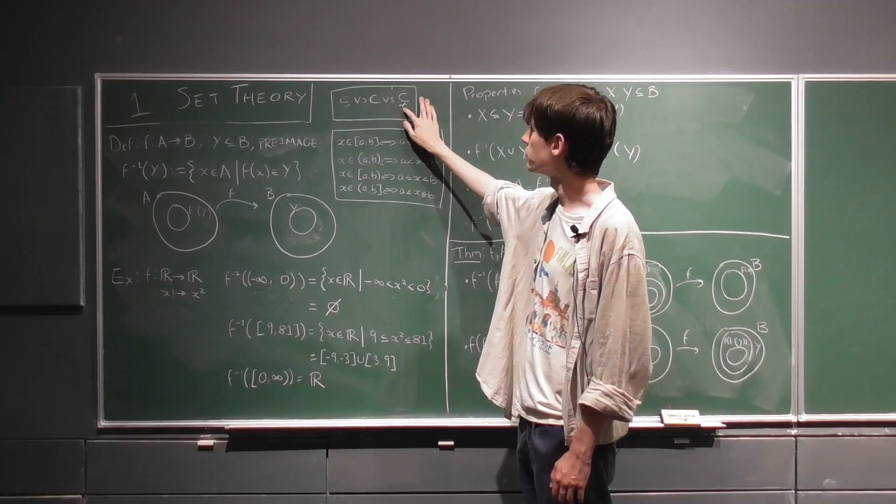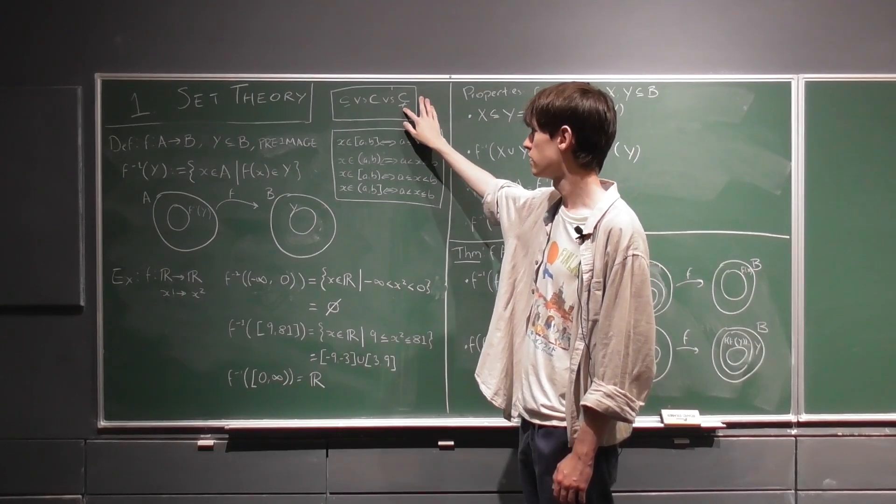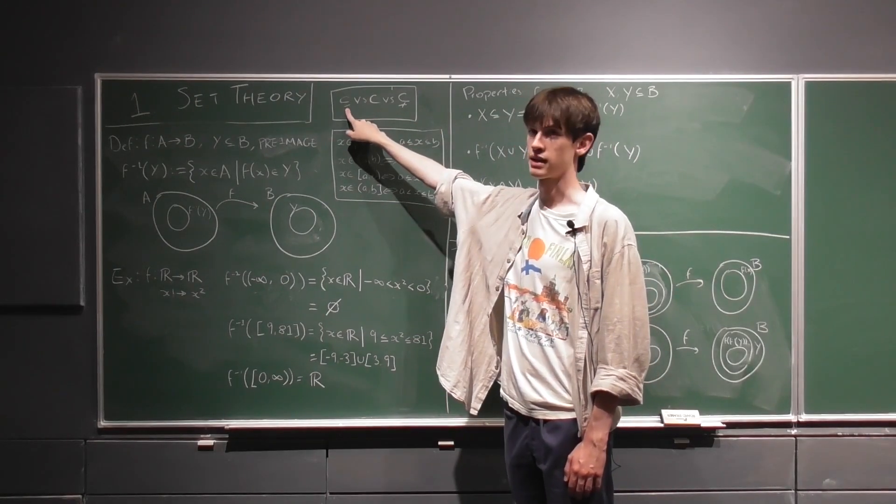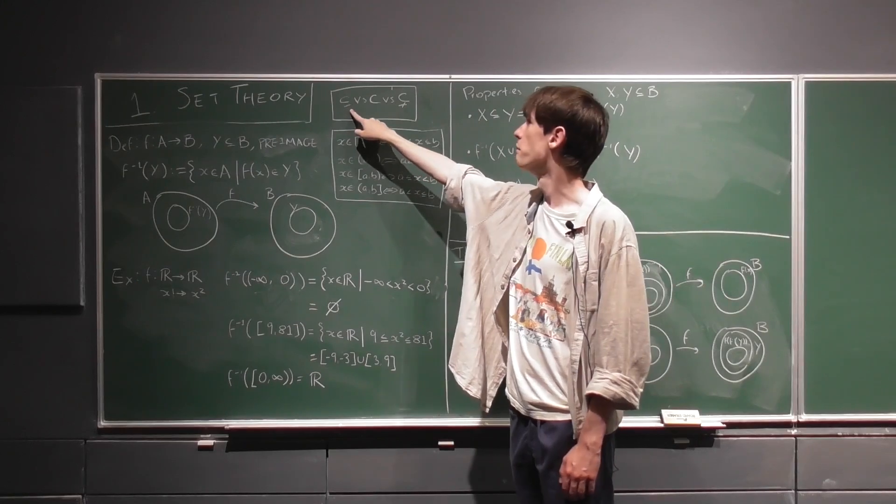If we ever want to be very clear that we mean a strict subset, so it's contained within but not equal to, we'll use this symbol. So it's a subset, and we draw a little line through this part here, which will make it a non-strict subset.